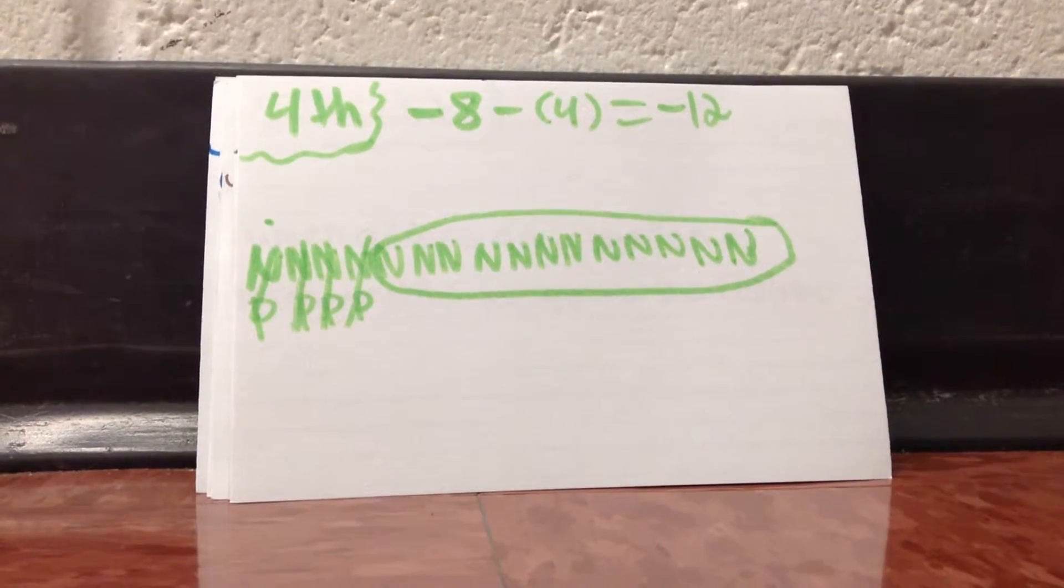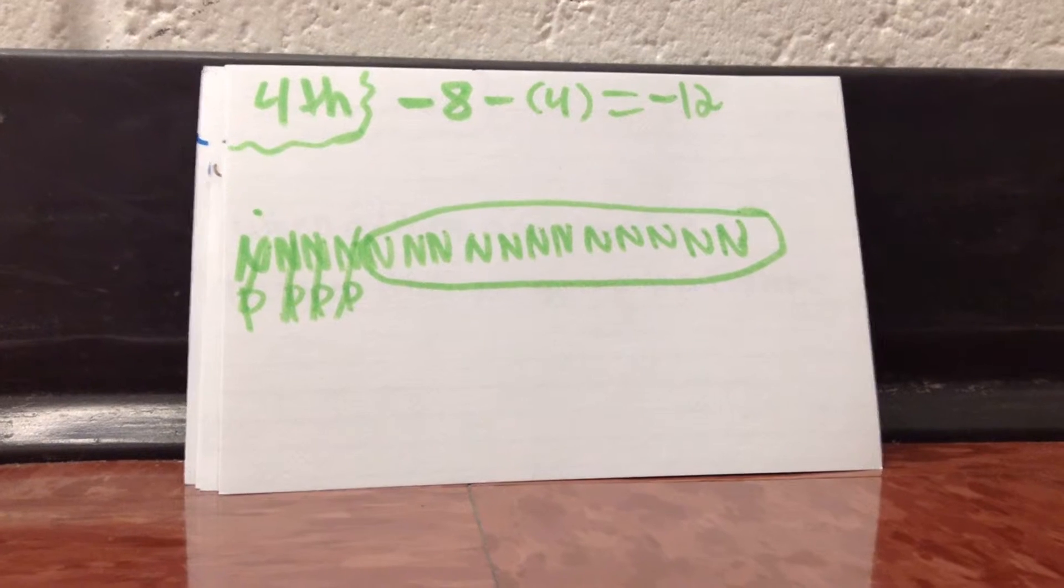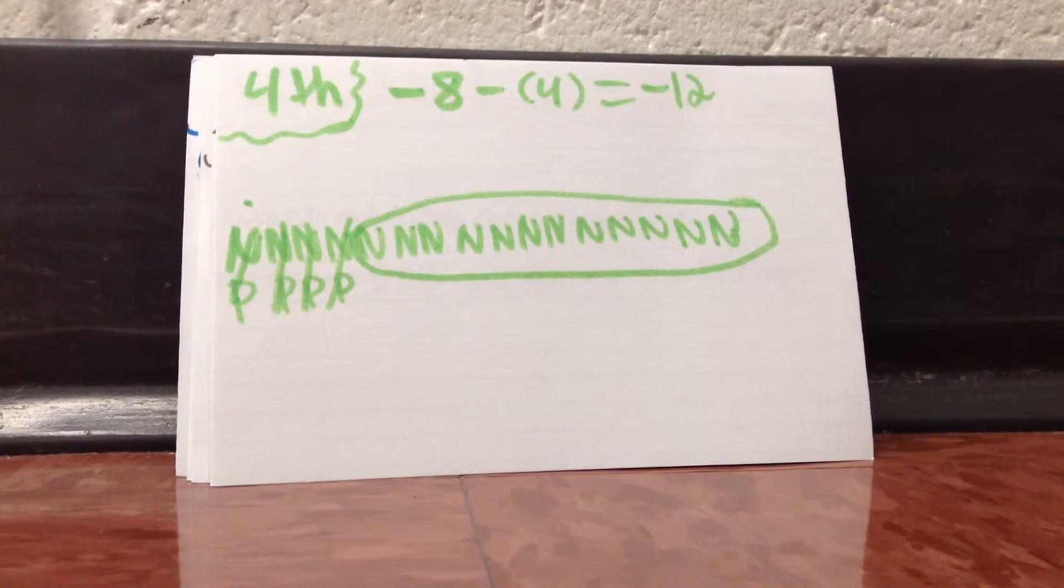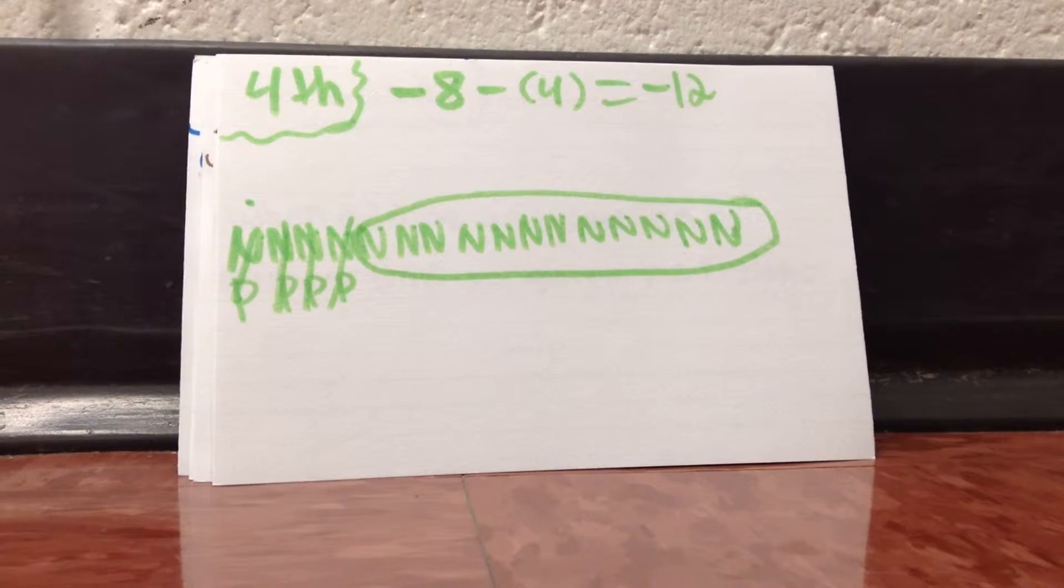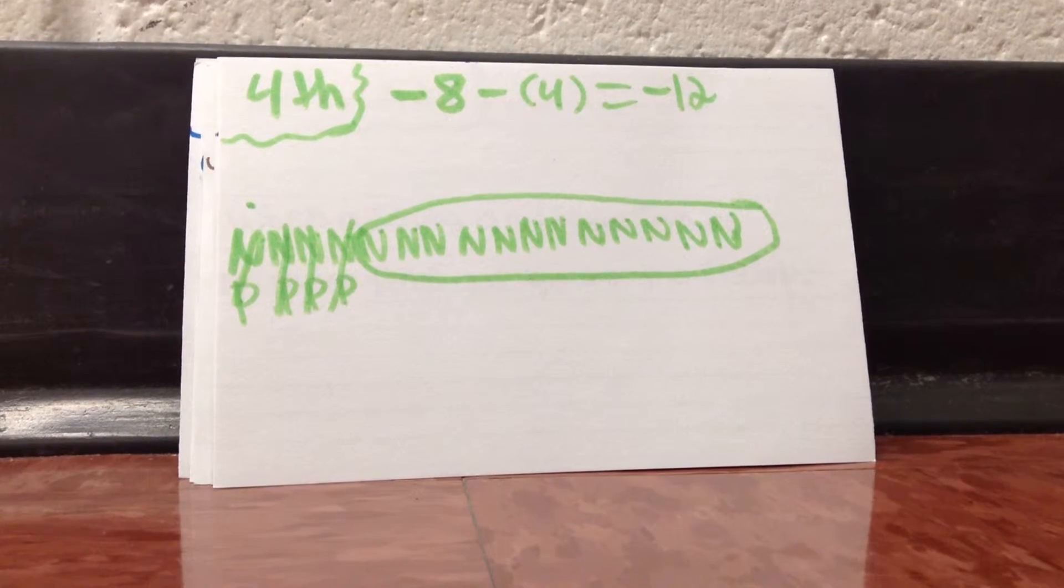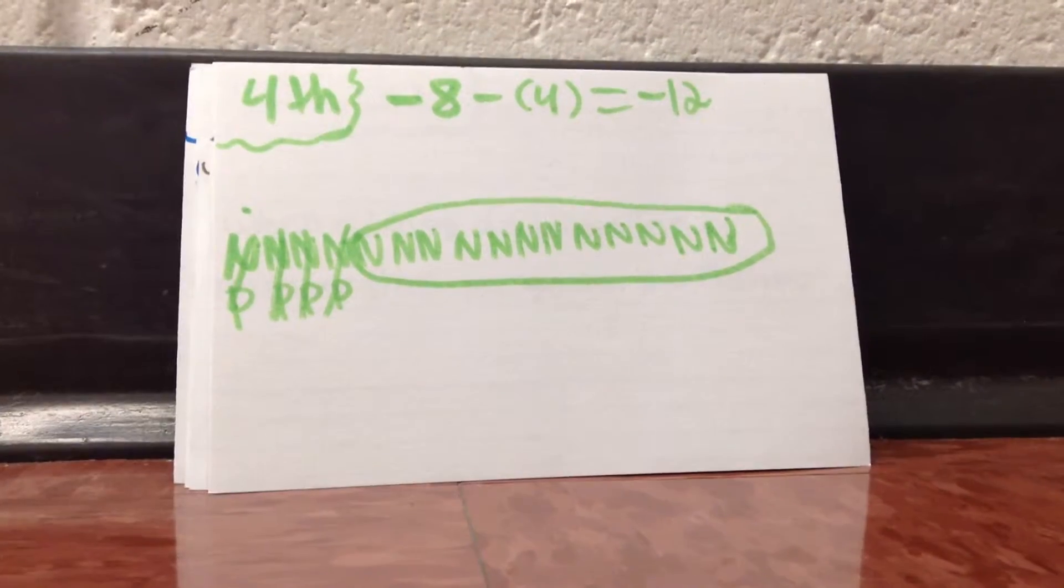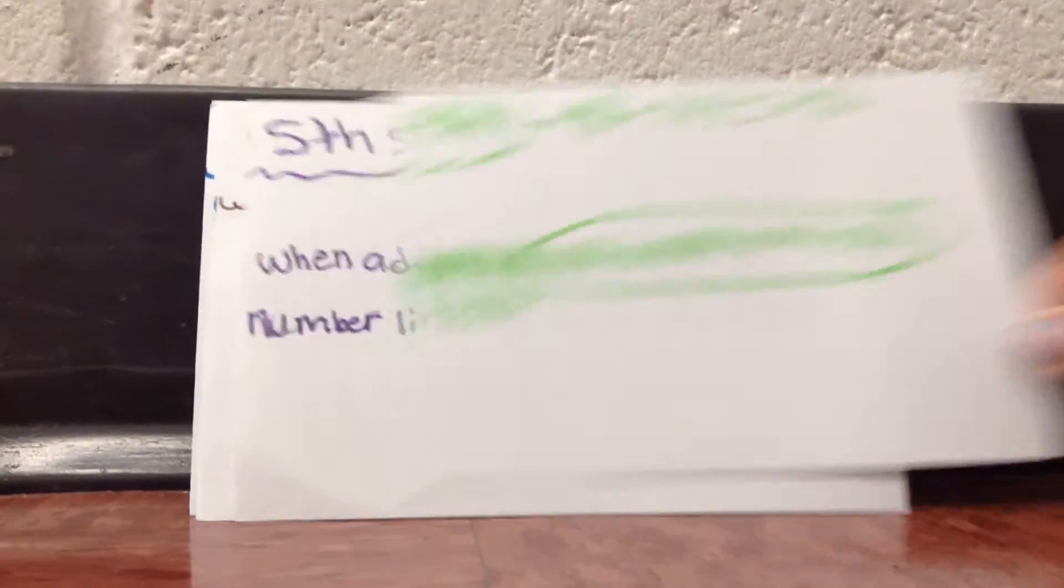Negative 8 minus 4 equals negative 12. You have to make sure you put the right amount, so you take away 4 negatives and 4 positives, which leaves you left with no positives, which your answer is negative, so your answer is negative 12.